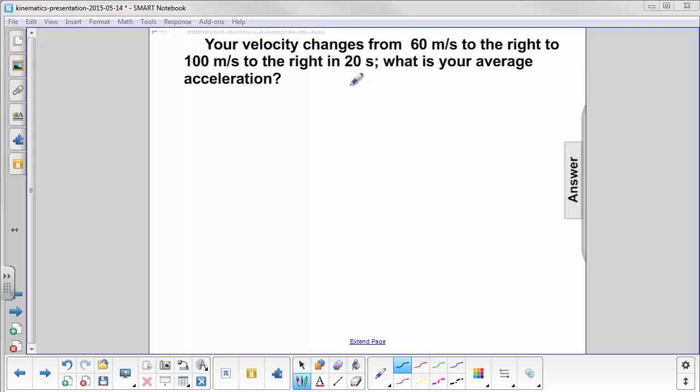Well, let's label the variables. t, or delta t, is 20 seconds.